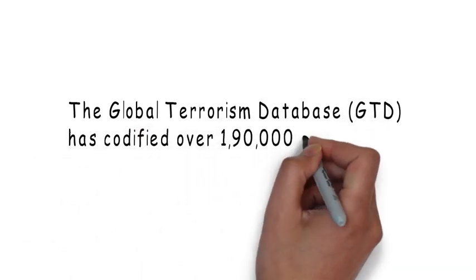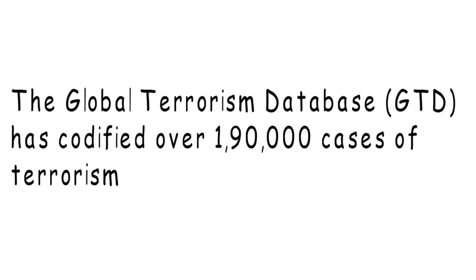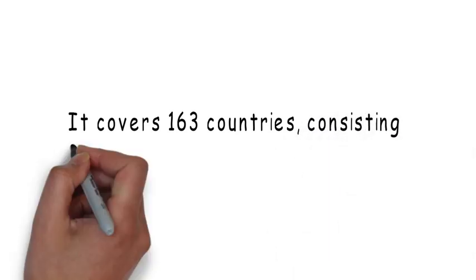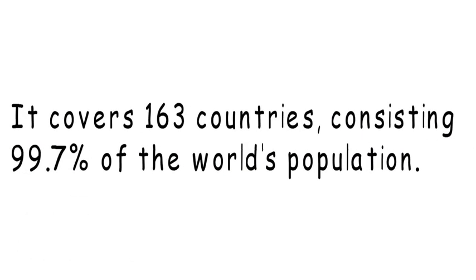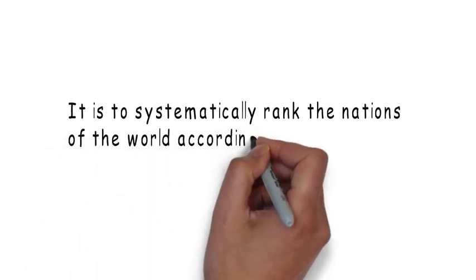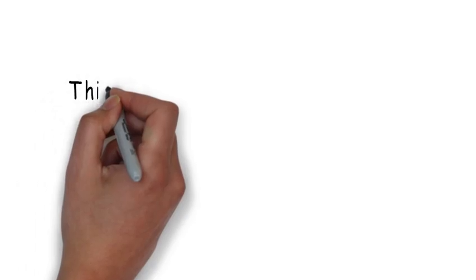The Global Terrorism Database has codified over 190,000 cases of terrorism. It covers 163 countries consisting of 99.7% of the world's population. It is to systematically rank the nations of the world according to terrorist activity.